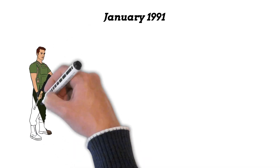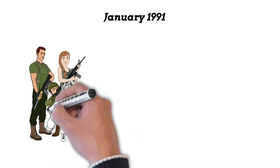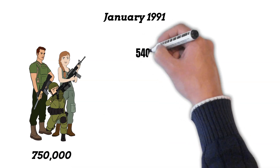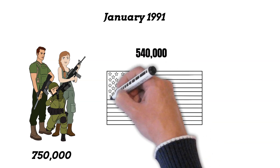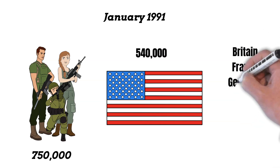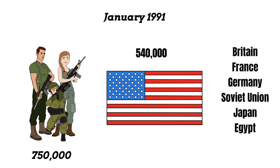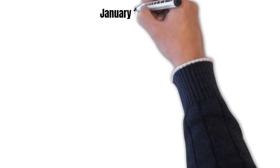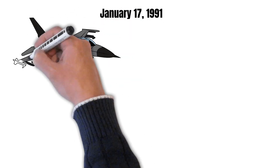By January 1991, coalition forces prepared to face off against Iraq with numbers ranging into 750,000. This included 540,000 U.S. soldiers and smaller forces from Britain, France, Germany, the Soviet Union, Japan, Egypt, and Saudi Arabia, among other nations.